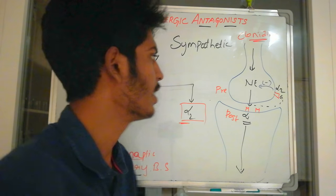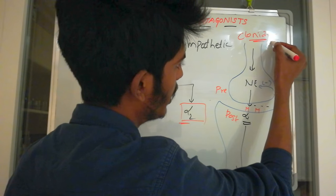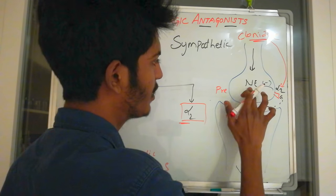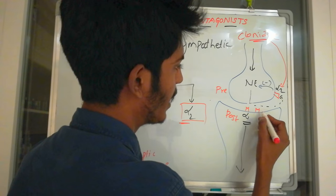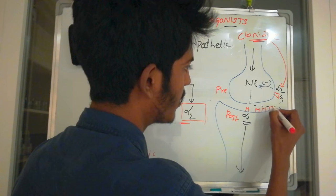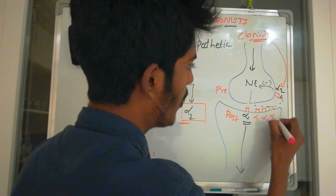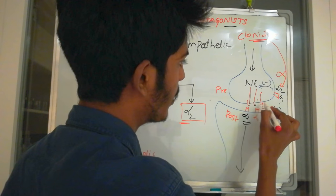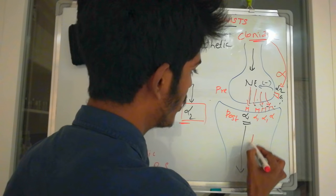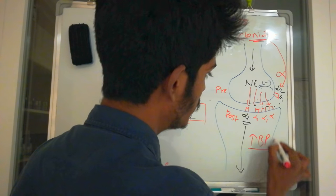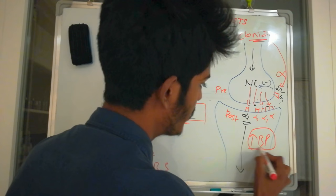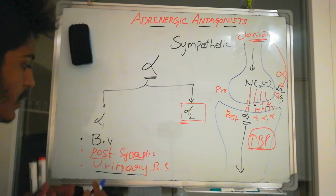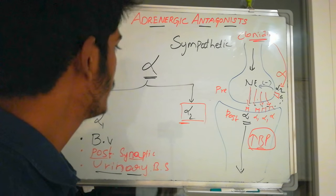One use of alpha 1/alpha 2 blockers is the clonidine withdrawal reaction. When clonidine is used continuously, it stimulates alpha 2 receptors, suppressing norepinephrine release. In response, the post-synaptic membrane upregulates and produces more alpha 1 receptors. When clonidine is stopped, the negative feedback is lost, norepinephrine floods the system, and the patient experiences a rebound increase in blood pressure — this is the clonidine withdrawal reaction.